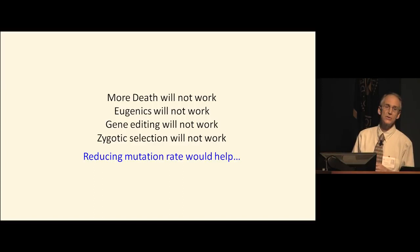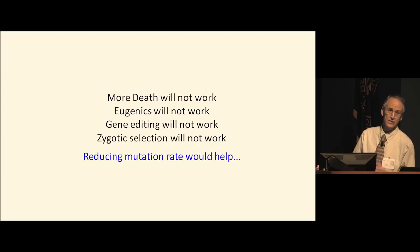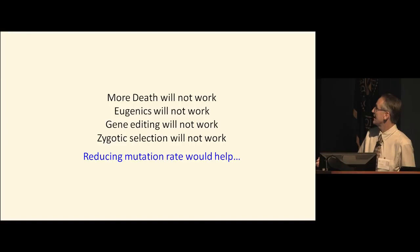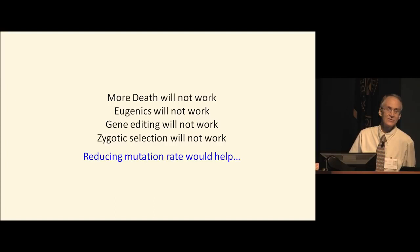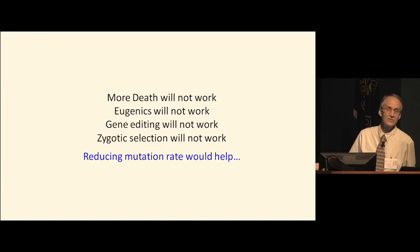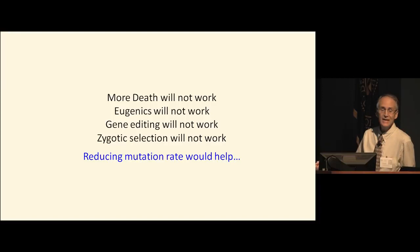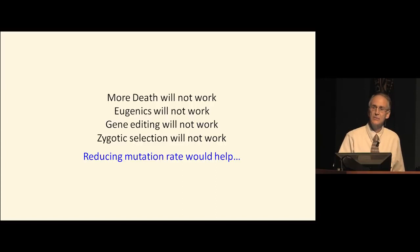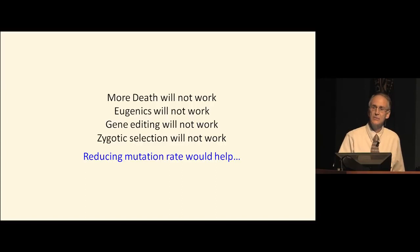Zygotic selection also cannot be applied broadly — it would only be for rich people. Reducing mutation rate would help, and I believe we should do everything we can to reduce both the genetic and epigenetic mutation rate. There's another layer of information — entropic degeneration at all levels, including the epigenome. What about epigenetic mutations? Should we be trying to reduce the rate of epigenetic mutation? It's not my field, but I believe we should strive toward reducing mutation rates overall.